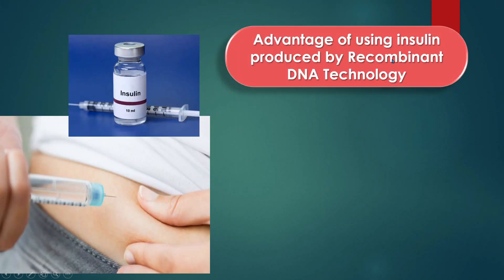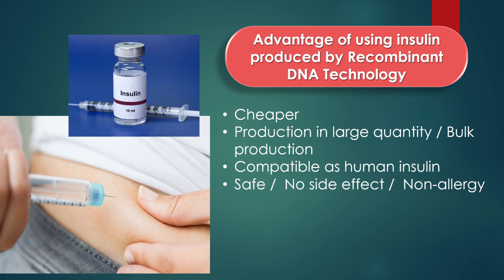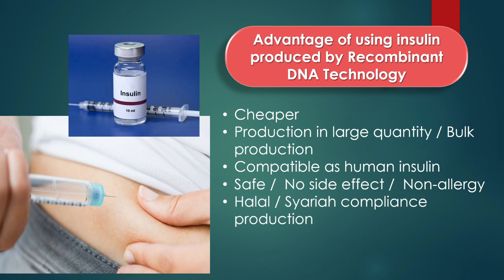The advantages of using insulin produced by recombinant DNA technology are: it is cheaper; it can be produced in large quantities at one time; it is compatible because it is similar to human insulin; it is safe with no side effects and causes no allergy; and most importantly, it is a halal product for sharia-compliant production.